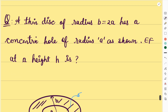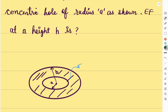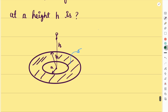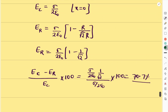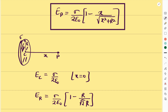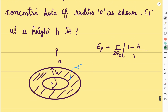Now a new question: we have a thin disk of radius b = 2a with a concentric hole of radius a. The surface charge density σ exists only from radius a to b. We need to find the electric field at height h above the center. Using the disk formula, the electric field due to the full disk of radius b is E = σ/(2ε₀) · [1 − h/√(b² + h²)].